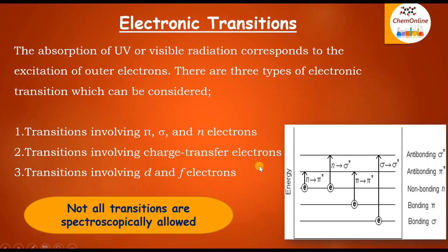The second type is the transitions involving charge transfer electrons. We have studied about charge transfer transitions seen in many inorganic complexes involving ligand-to-metal and metal-to-ligand charge transfer transitions. The third type is the transitions involving d and f electrons, like d-d transitions or f-f transitions, usually seen in many coordination compounds. So these three are common types of electronic transitions found in molecules.